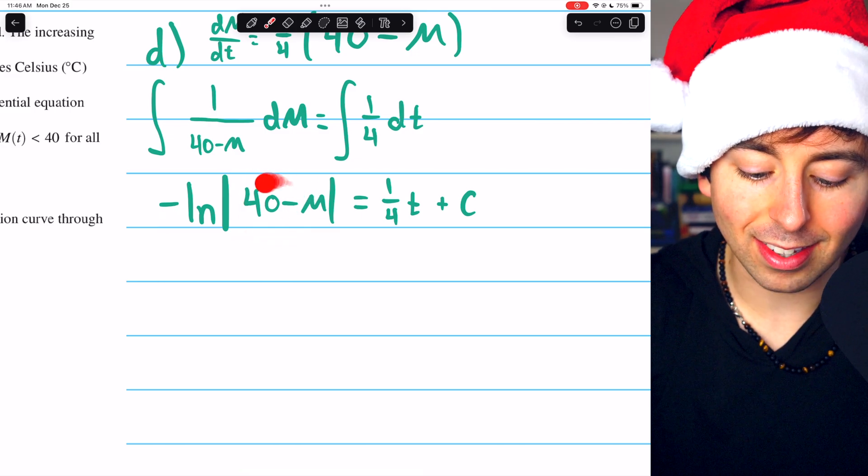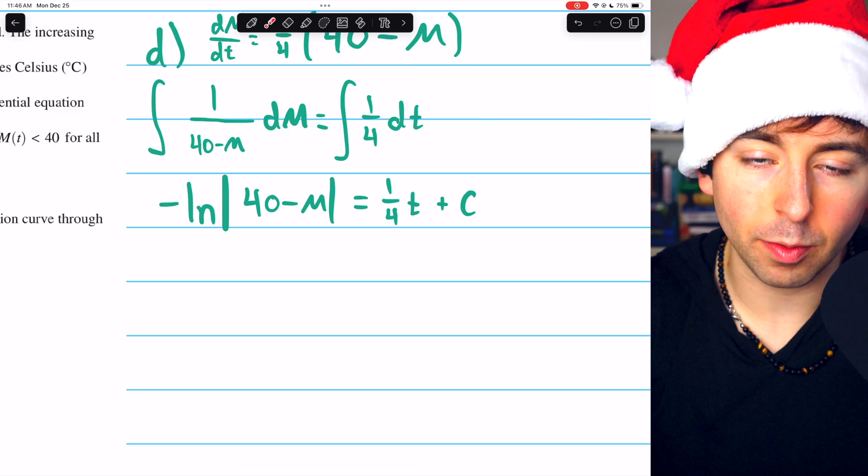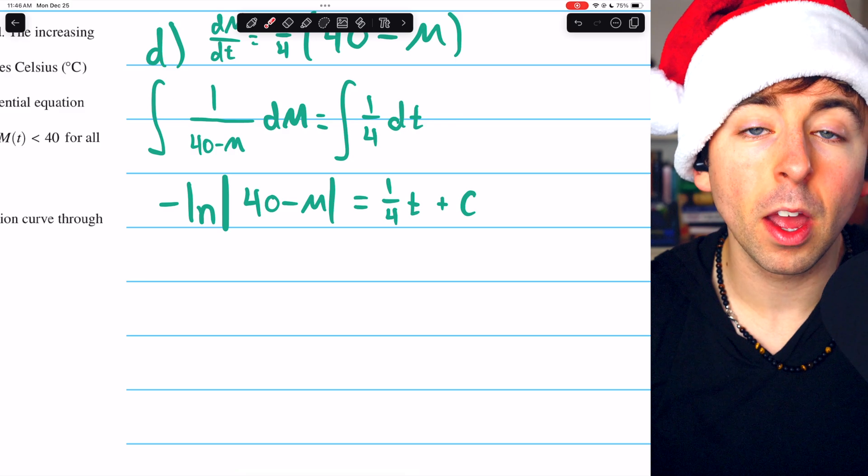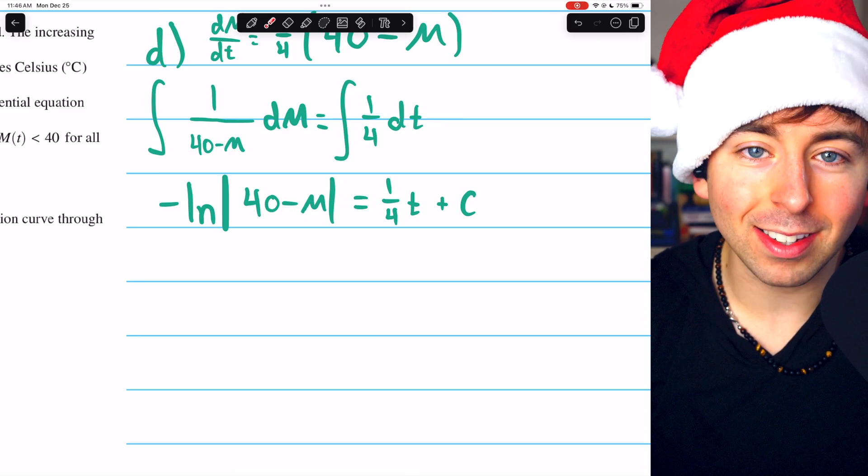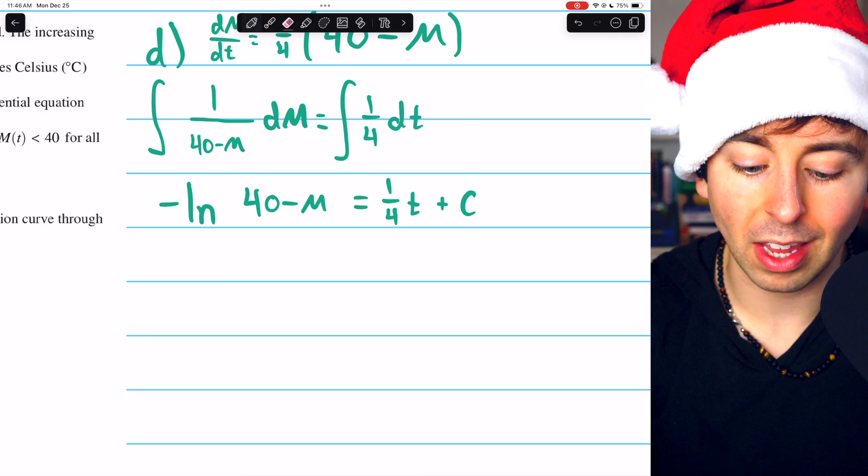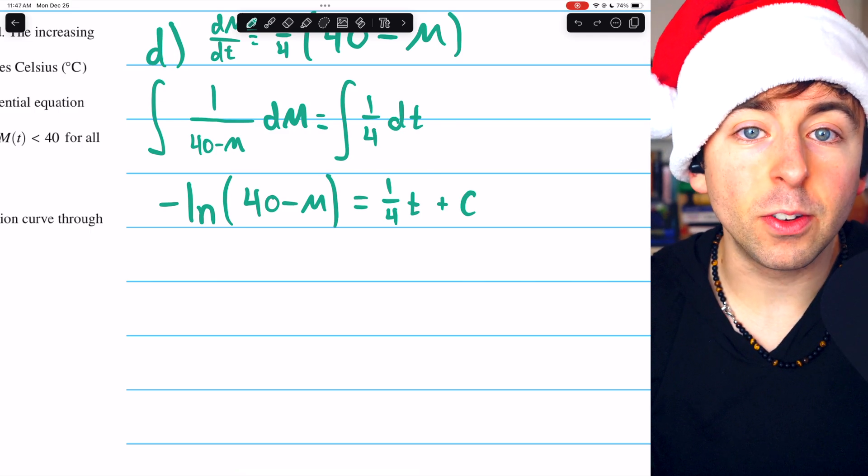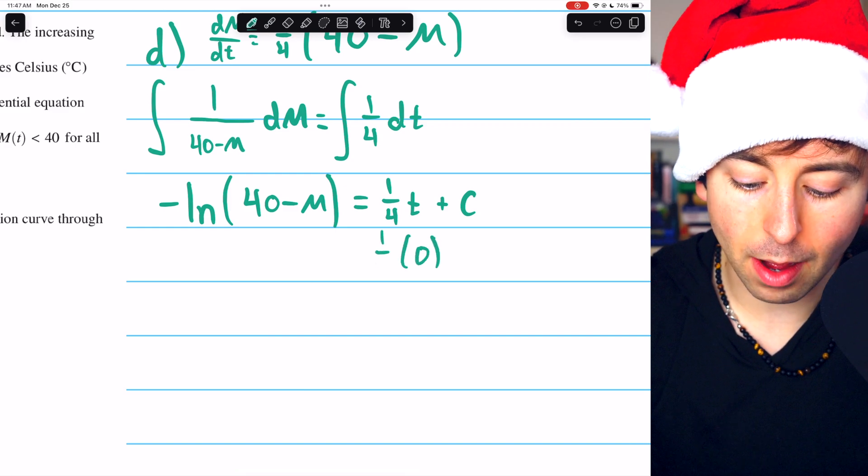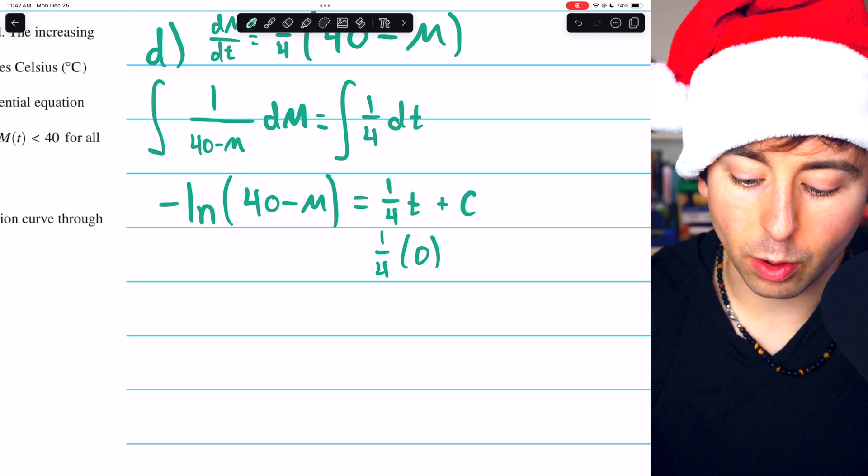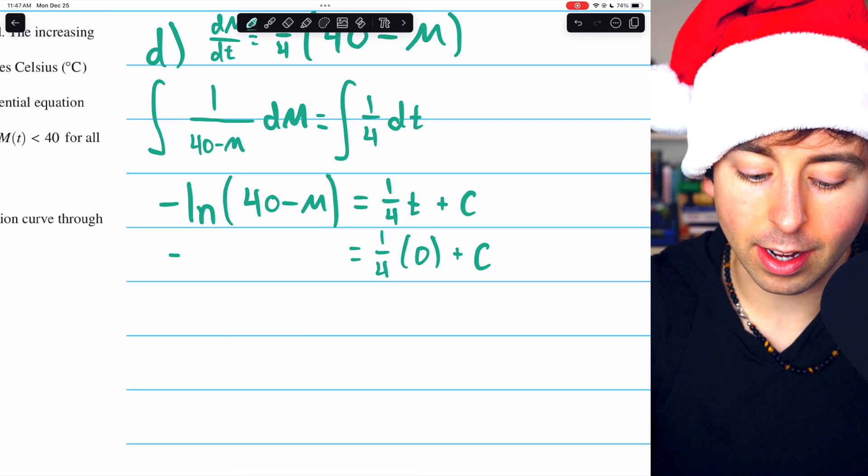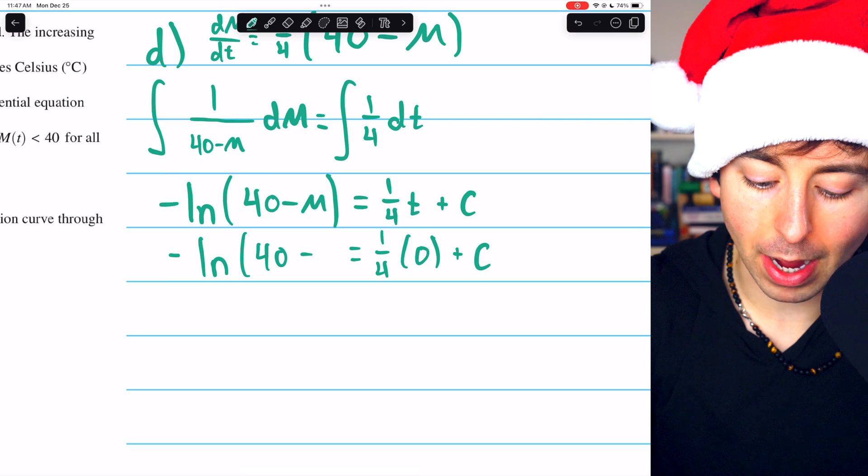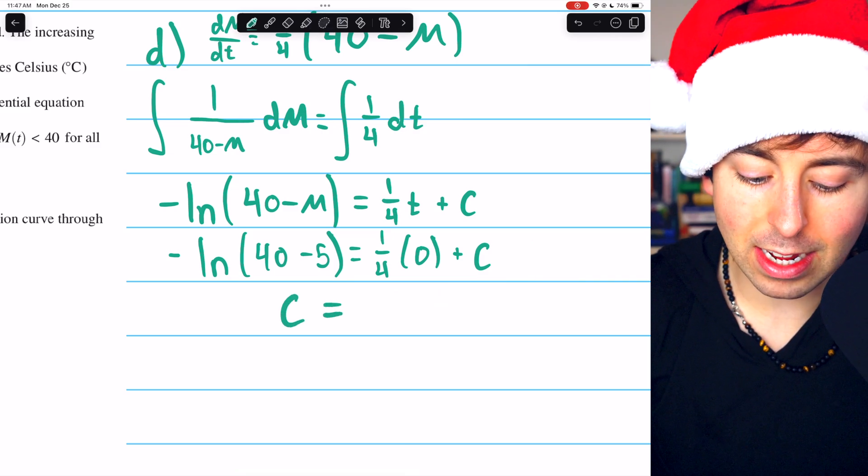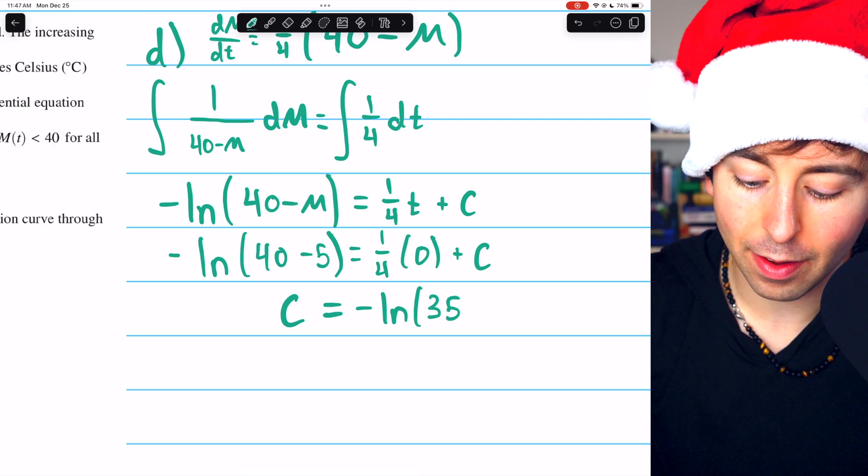Now we can go ahead and integrate the left and right sides. Integrating 1 over (40 minus M) gives negative natural log of (40 minus M). And on the right, we have one-fourth t. Let's suppose that all of the arbitrary constants gathered to the right side, so I'll just put a plus C over there. Notice this negative came from the fact that (40 minus M) has a derivative of negative 1. We already know that (40 minus M) isn't negative, it's always positive, so we don't need the absolute value bars. Now, let's use our initial condition to solve for the constant C. We know that when t equals 0, the temperature of the milk M is 5. On the right side, we have one-fourth times 0 plus C. On the left side, we have negative natural log of (40 minus 5). So we're just going to have C, and thus, C equals negative natural log of 35.